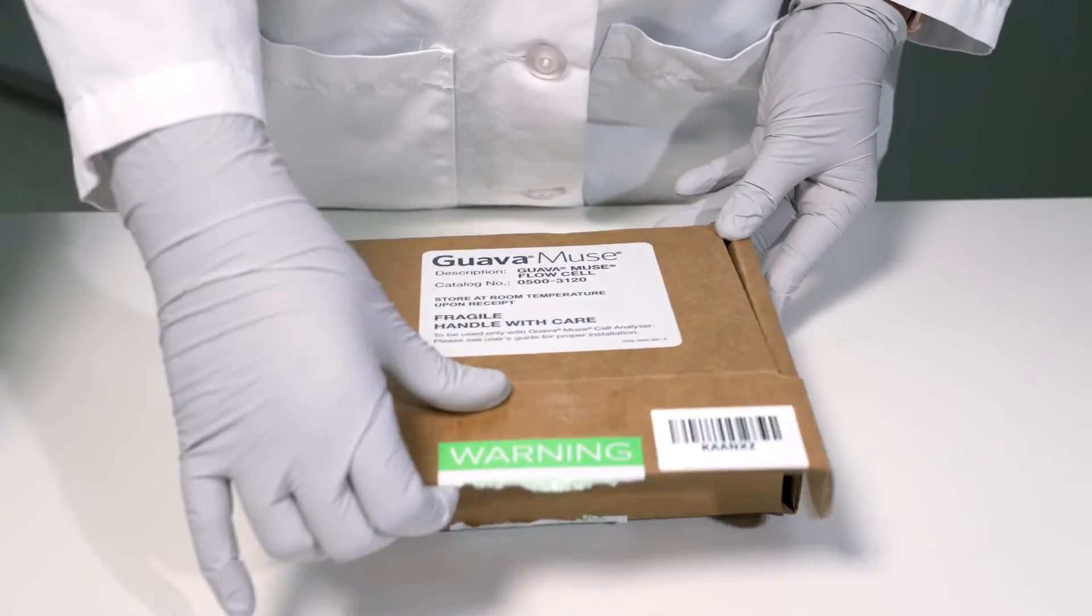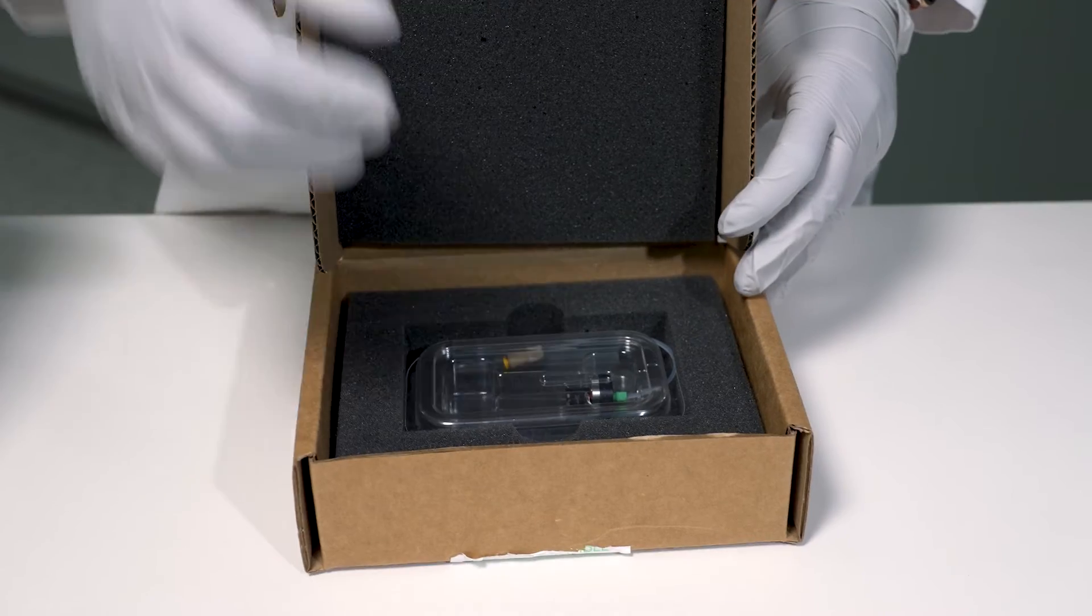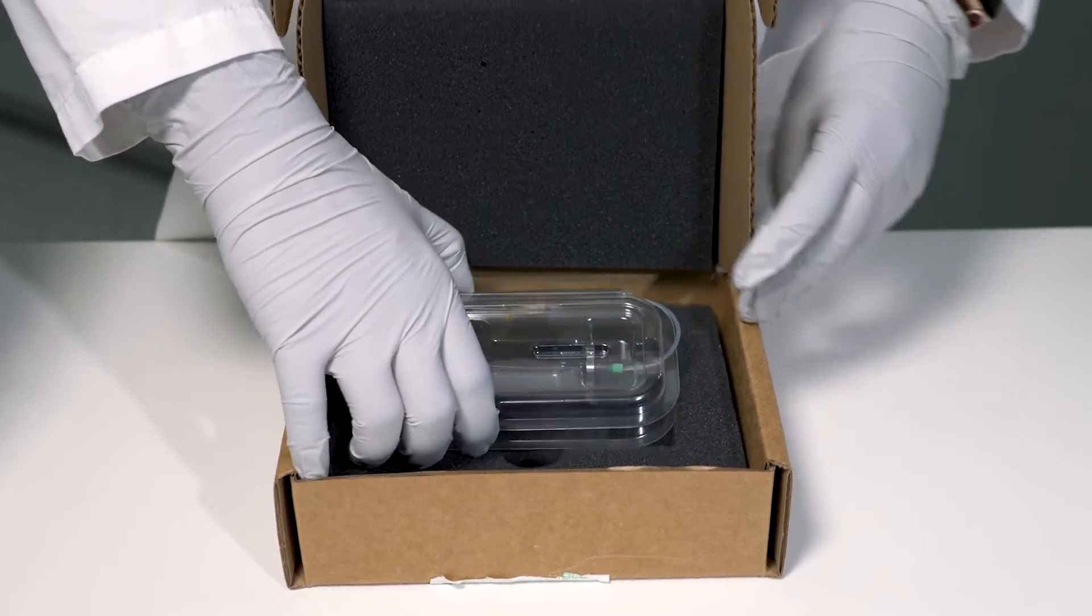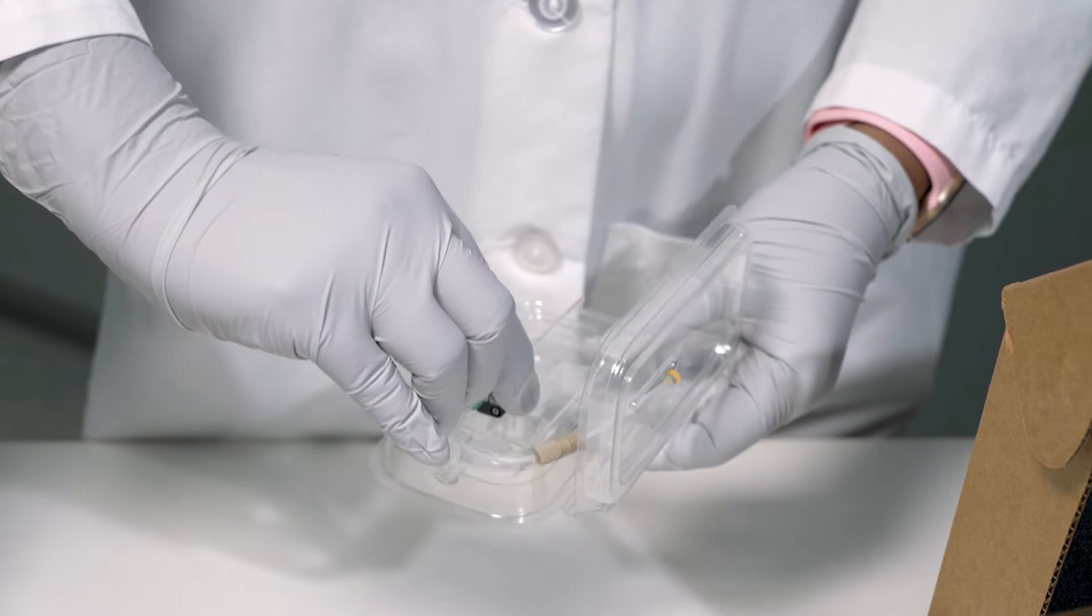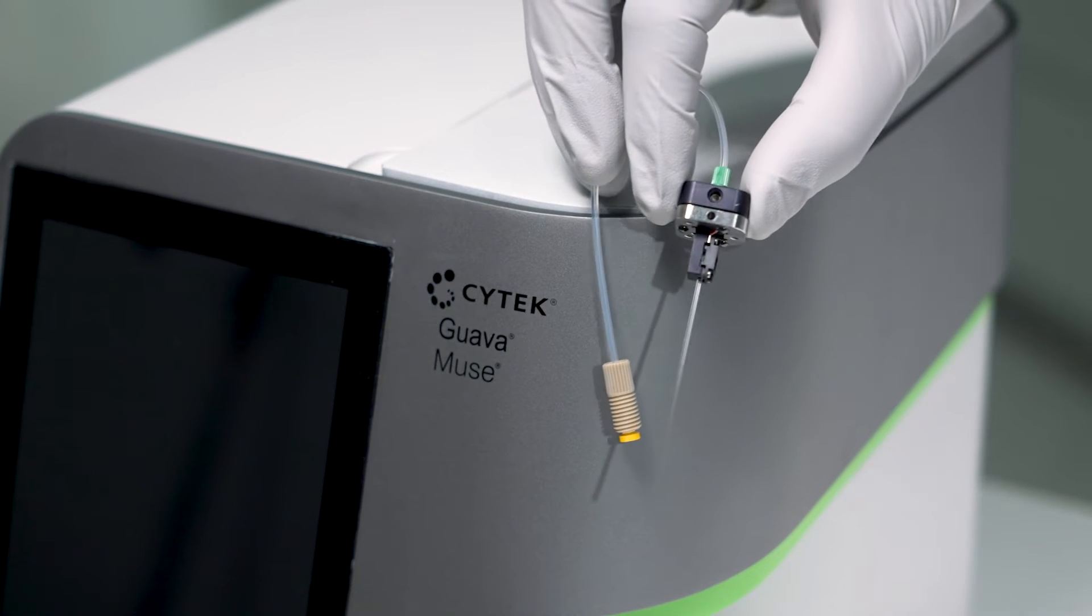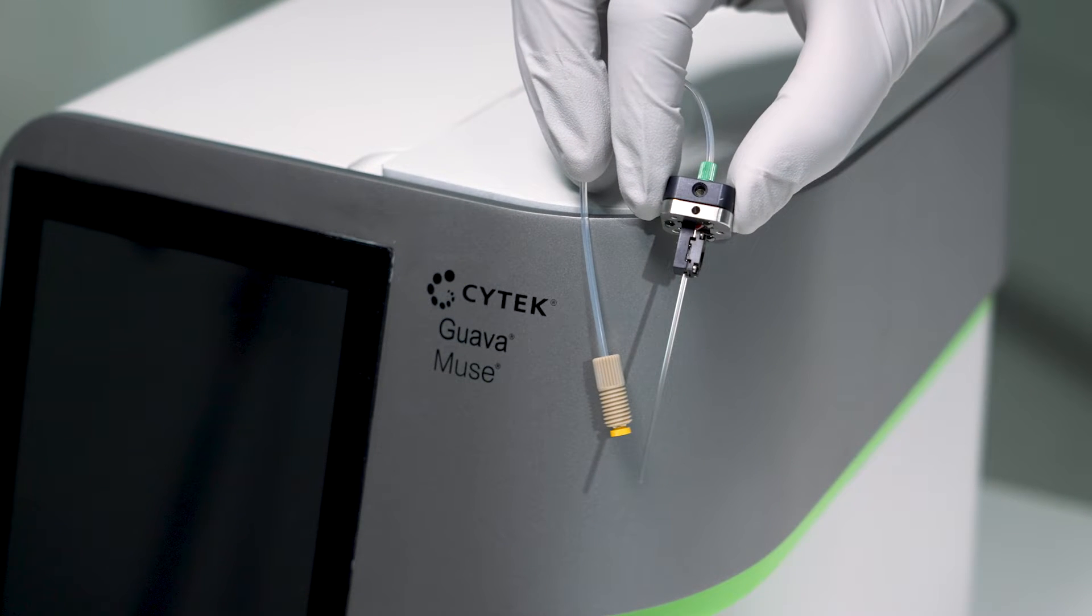Now it is time to install your flow cell. Remove the flow cell from the shipping box. Carefully remove the flow cell from its packaging. Holding as close to the green connector as possible, identify the glass capillary and lens area. It is important not to touch or allow fluid on the lens portion.